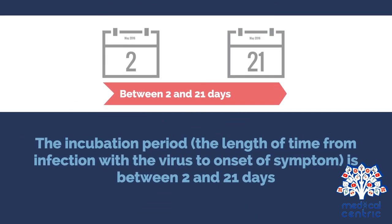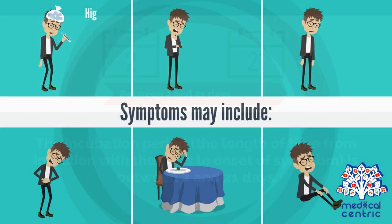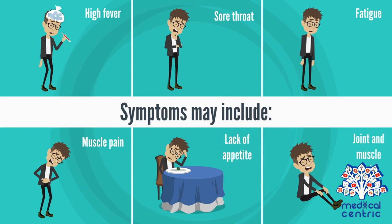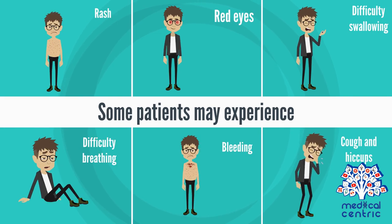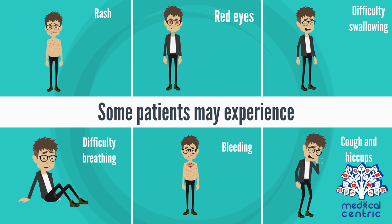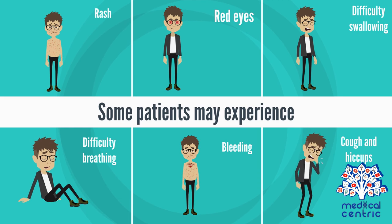The incubation period — the time from infection to onset of symptoms — is between 2 to 21 days. Symptoms may include sudden onset of high fever, sore throat, fatigue, muscle pain, lack of appetite, and joint pain. Some patients may also experience rash, red eyes, difficulty swallowing, difficulty breathing, bleeding inside and outside of the body, cough, and hiccups.